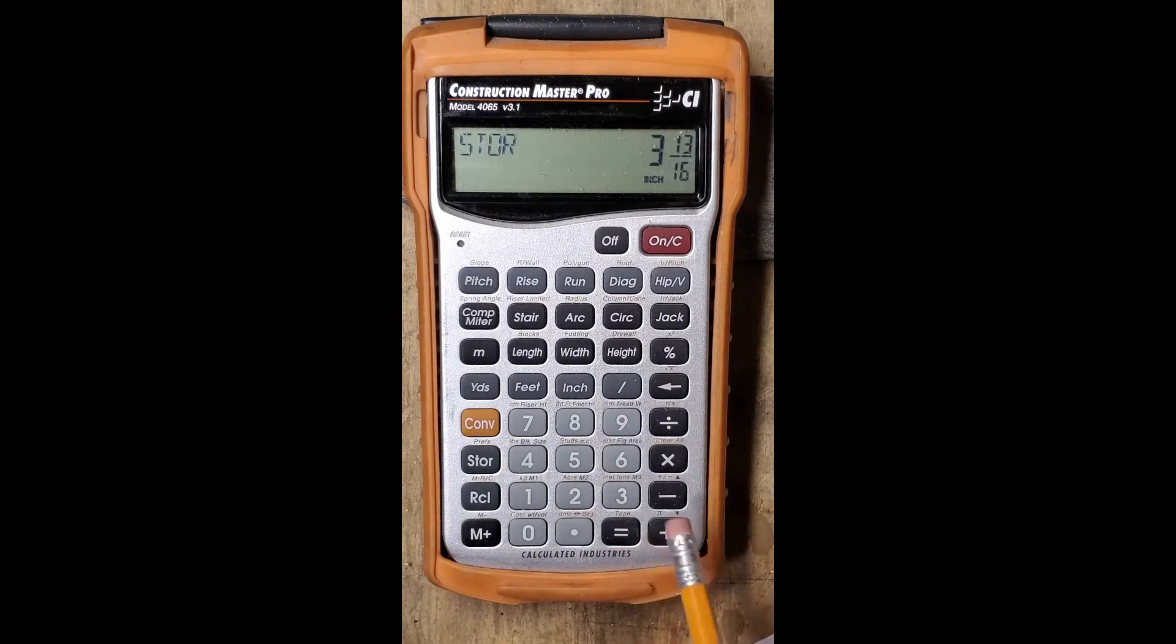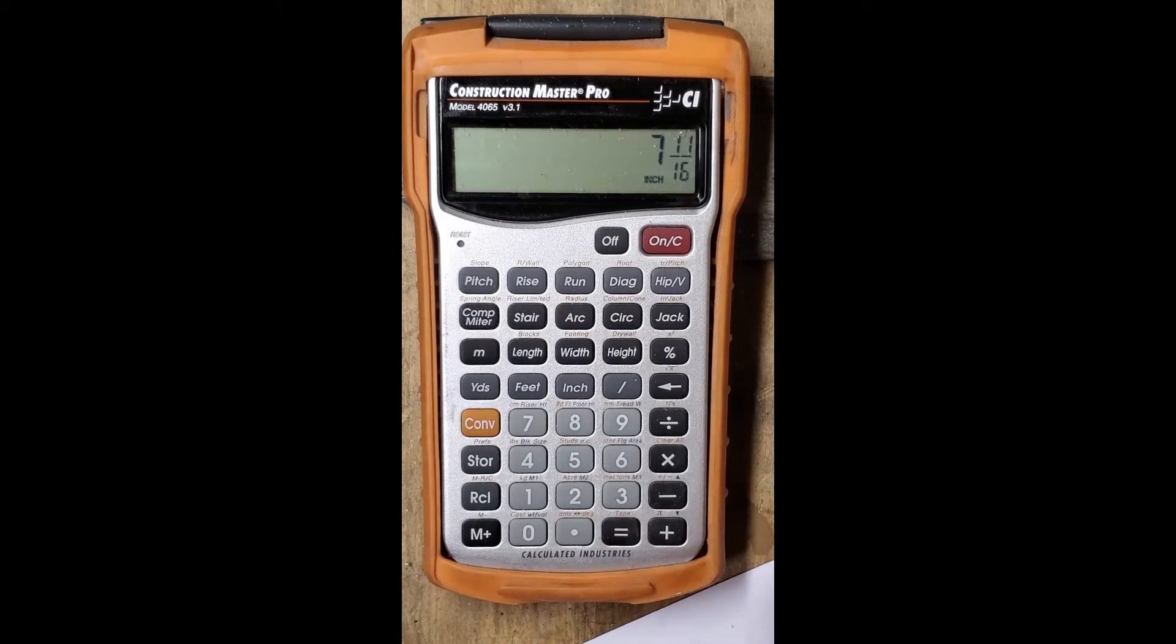So we're going to now get the numbers we need to lay out for the arch for our segments. So what we're going to do is add the 3 and 13 sixteenths and that's going to give us 7 and 11 sixteenths. So basically we're going to keep hitting the equal button and that's going to give us a layout for each segment. So our first segment was 3 and 13 sixteenths. Our second is 7 and 11 sixteenths.